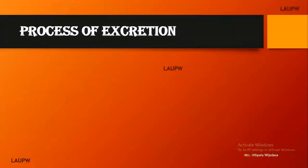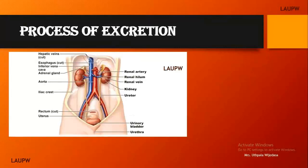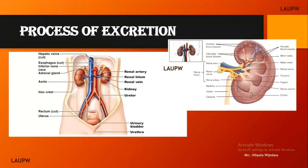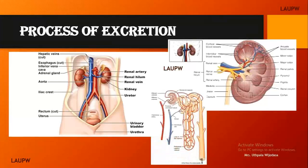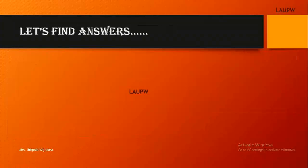Let's discuss the process of excretion which takes place in the human body. Excretion is an important process because a lot of waste materials are produced during metabolic reactions in the body. There are several excretory organs in our body, but here we are mainly considering the urinary system. Excretion is the removal of excretory products produced during metabolism.